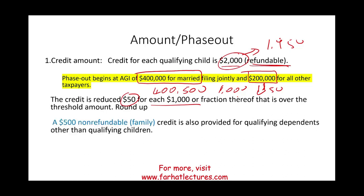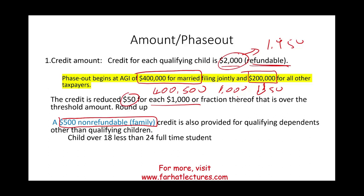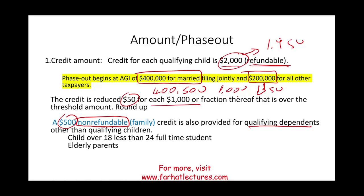Now, why is this credit also called the family tax credit? The reason is because they added a $500 non-refundable family credit. So if you have someone in your household — like a child over the age of 18 but under 24 who is a full-time student and a qualifying dependent, but not a qualifying child — the government will give you an additional $500. Notice this is non-refundable, so if you have no tax liability, you don't take advantage of it.